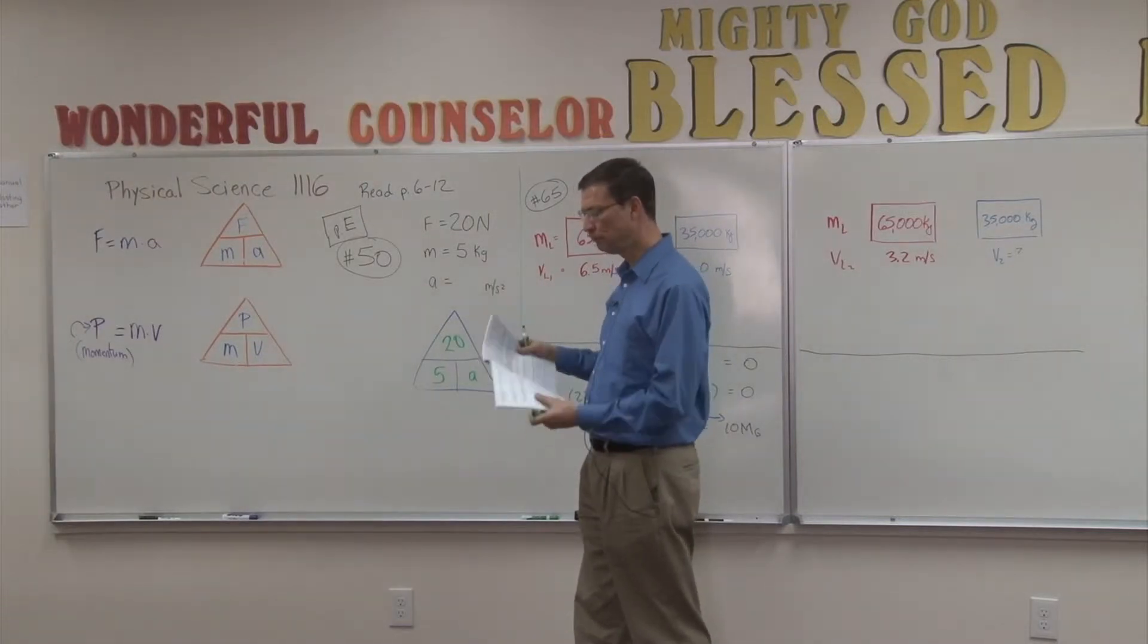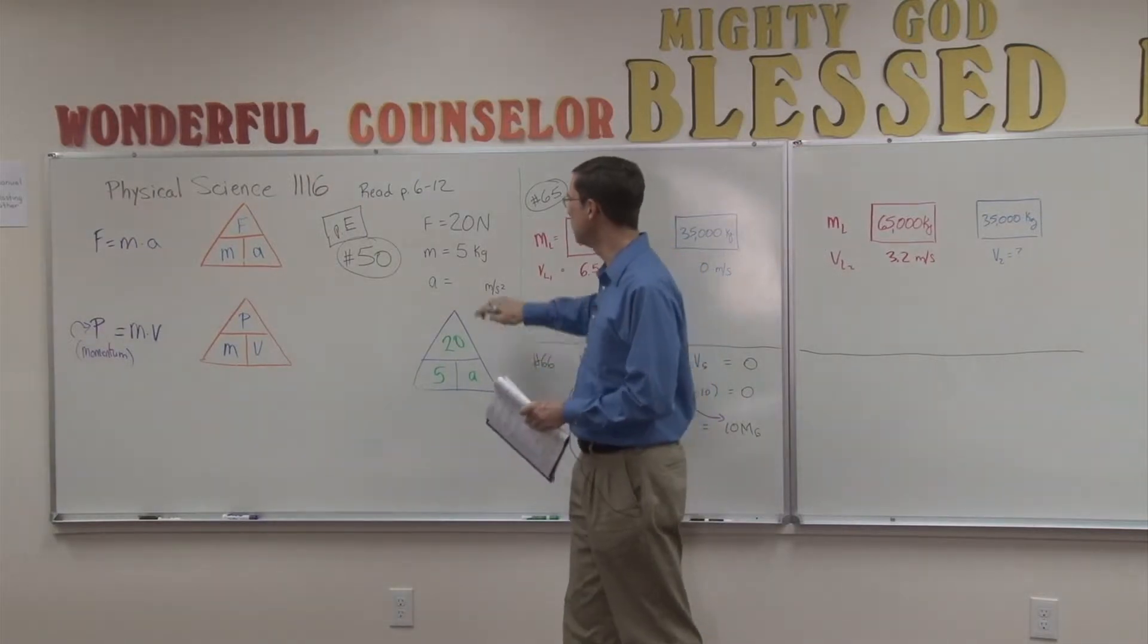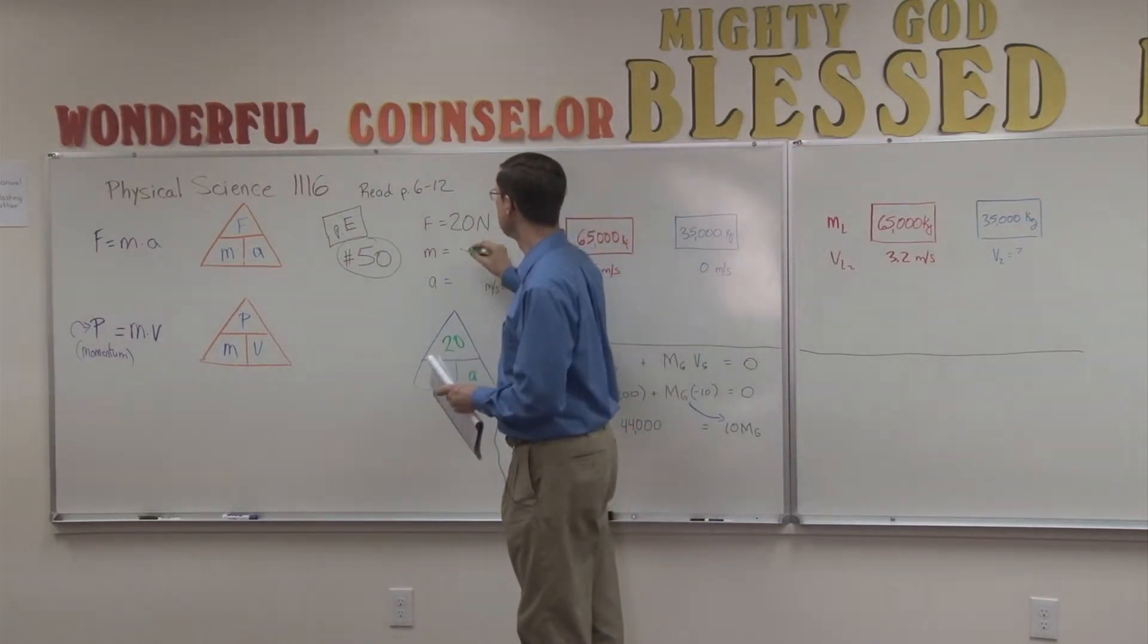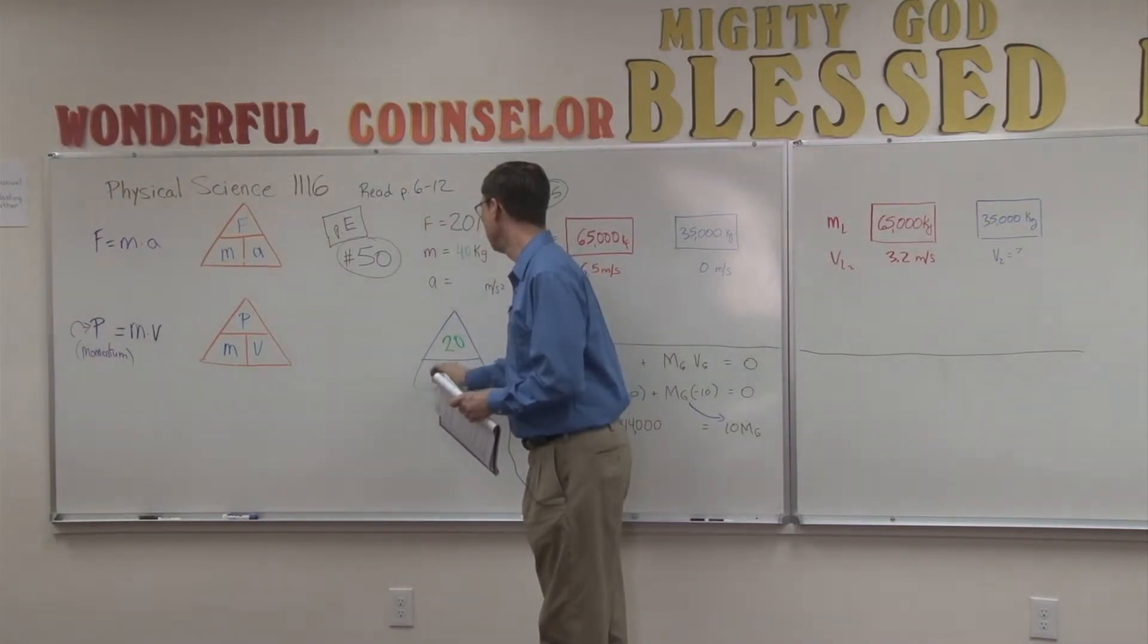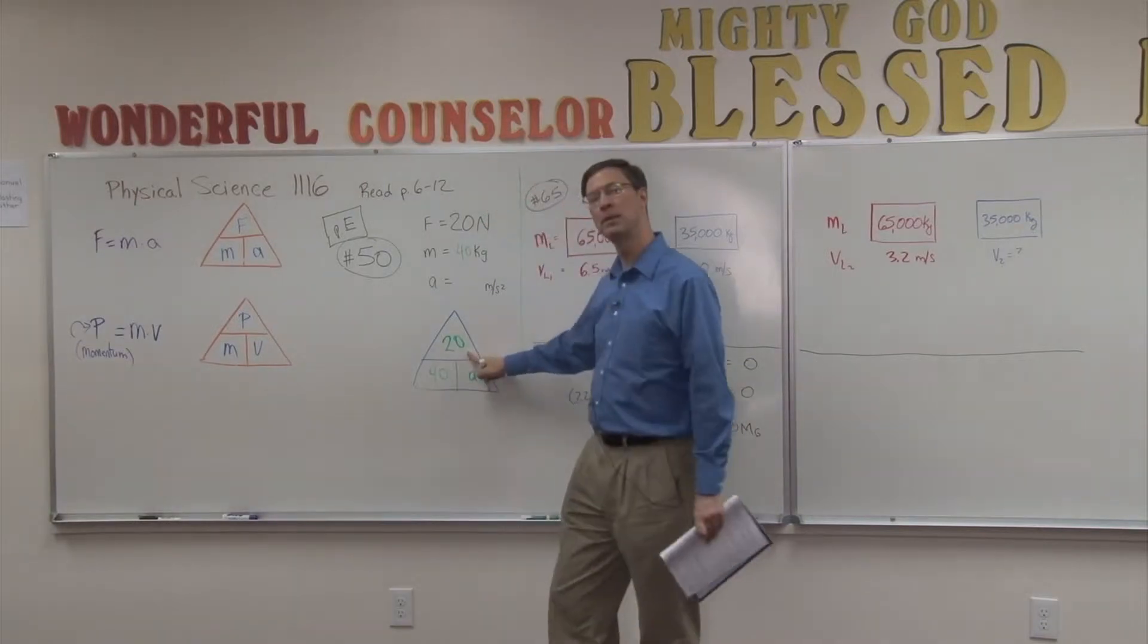Then, on that problem, it changes it up and says what would the acceleration be if we plugged in 40? So now, for problem B, you're going to change this and plug in 40 down here, but leave 20 up here.